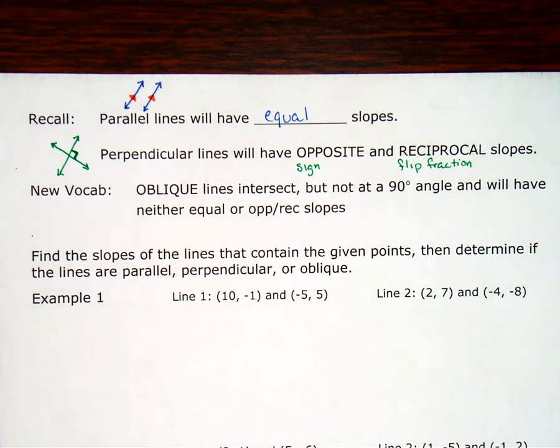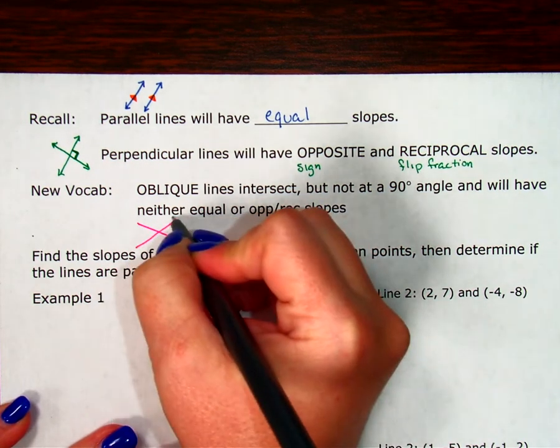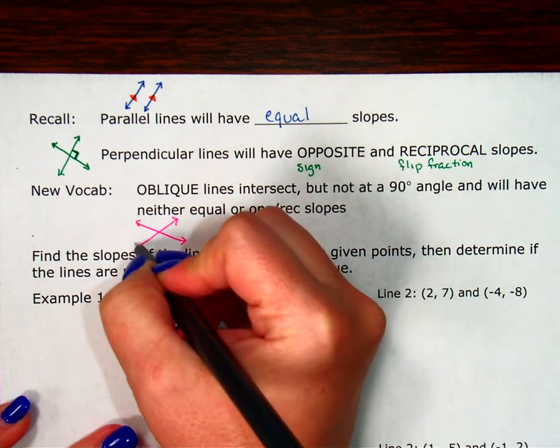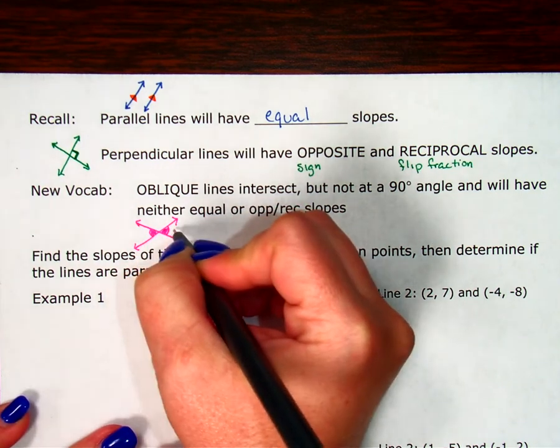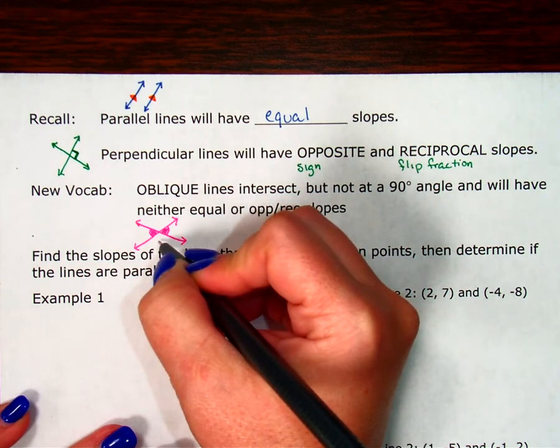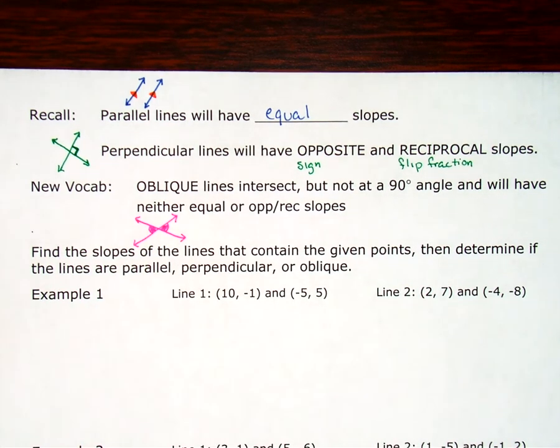And we have a new vocabulary word for this lesson. It's called oblique. Oblique lines intersect, but not at a 90 degree angle. They have neither equal or opposite reciprocal slopes. So oblique lines are what we usually see a lot in geometry. For oblique lines, you're going to have your congruent angles that are vertical. And one set will be acute and the other set would be obtuse. They can't all be 90 because that would be perpendicular. And they do intersect unlike parallel. So that's the three relationships you can have of lines that are on the same flat surface.